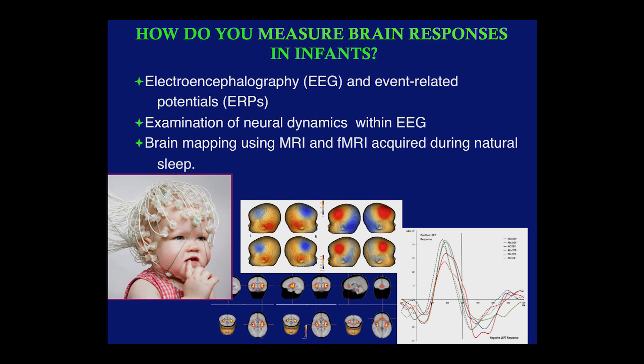So how do you measure brain responses in infants? You can use electroencephalography, EEG, which reflects the summation of the synchronous activity of millions of neurons that have similar spatial orientation. You can also use brain event-related potentials, which are an average across many trials to generate an averaged waveform time-locked to external stimulation. This permits examination of the time course and brain areas related to sensory processing, and you can compare group responses as well as compare individual responses to group norms.